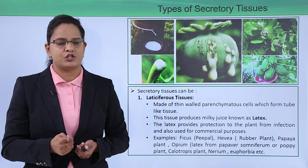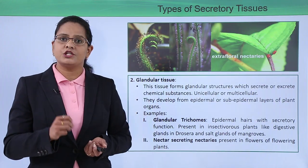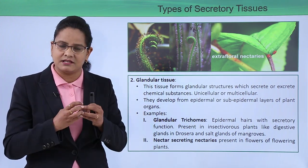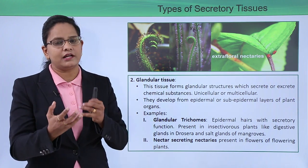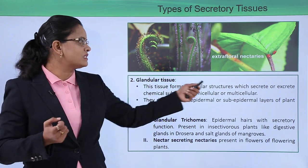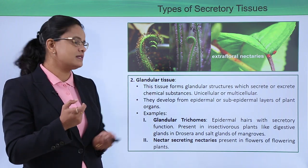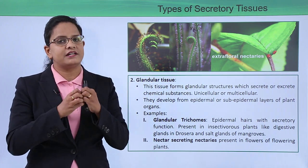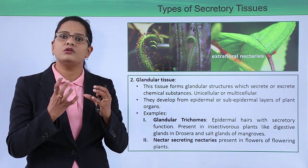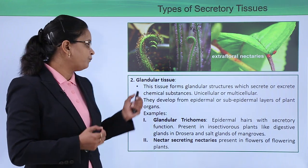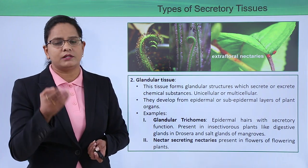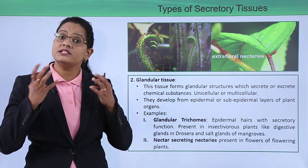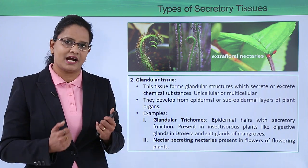The Nerium plant found on roadsides and the Euphorbia plant also have latticiferous tissues, secreting a whitish substance which is latex. The next type of secretory tissue is glandular tissue. Here, cells combine to form glands which excrete or secrete substances. The tissue forms a glandular structure that can be single-celled or multicellular. These tissues develop from the epidermal or sub-epidermal layer, making them generally external in nature.